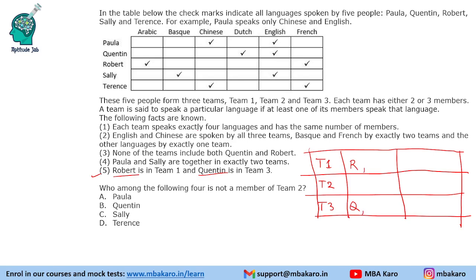We are given that each team speaks exactly 4 languages and has the same number of members, so each team will have either 2 or 3 members. English and Chinese are spoken by all 3 teams, so 2 languages are mandatory. Basque and French are spoken by exactly 2 teams, and other languages by exactly 1 team. So 1 team will speak Arabic — that will include Robert — and 1 team will speak Dutch, which will include Quinton.